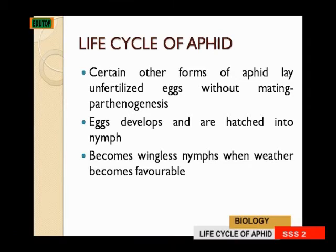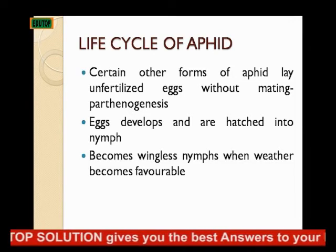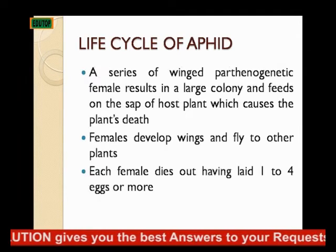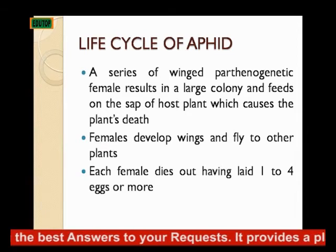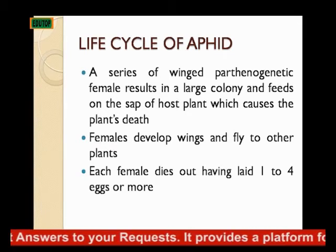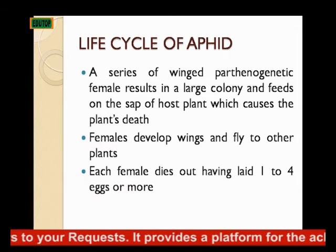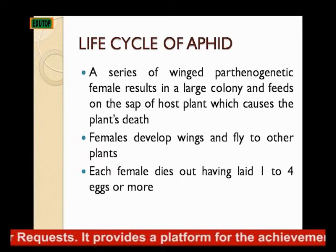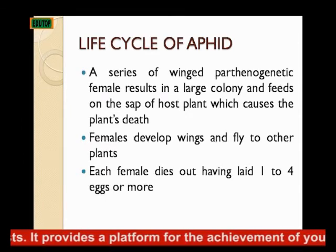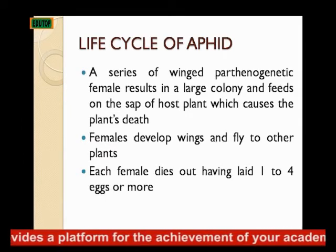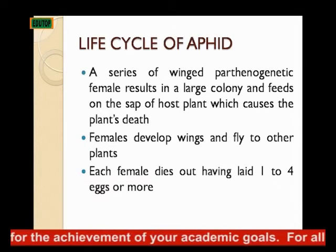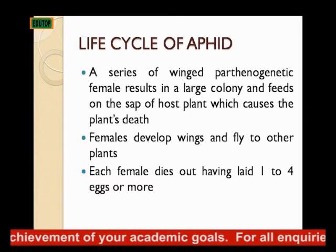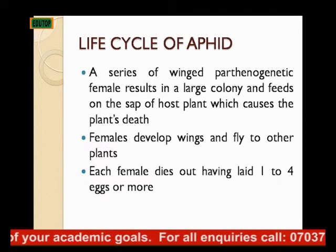The eggs develop and hatch into nymphs, becoming wingless nymphs when weather becomes favorable. A series of winged parthenogenic females result in a large colony that feeds on the sap of host plants, causing the death of the plants. The females develop wings and fly to other plants, and each female dies having laid about one to four eggs or more.